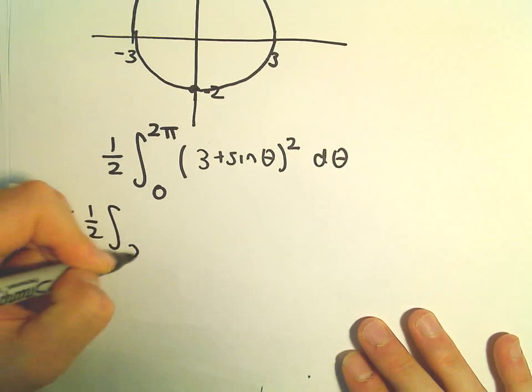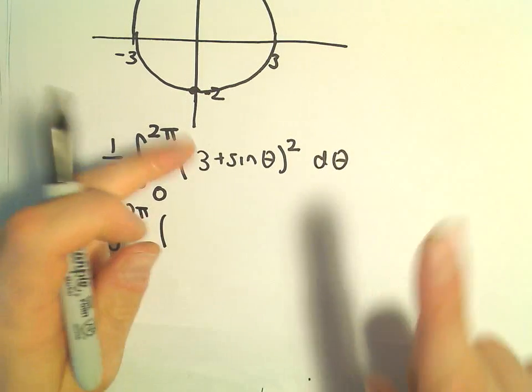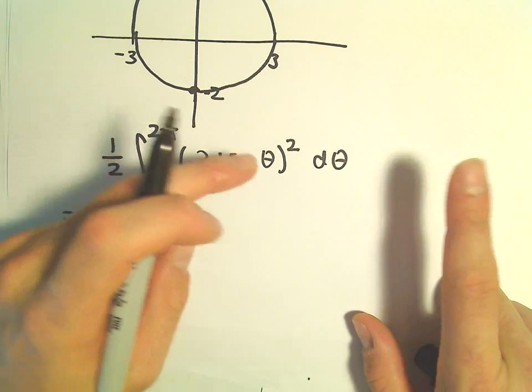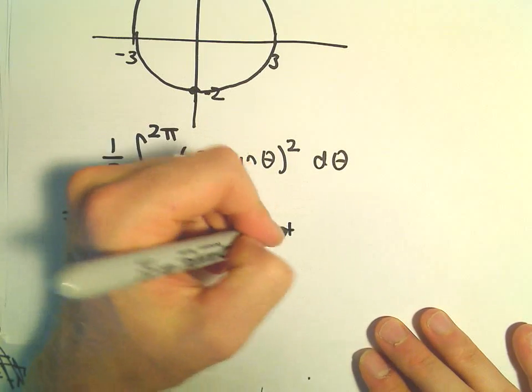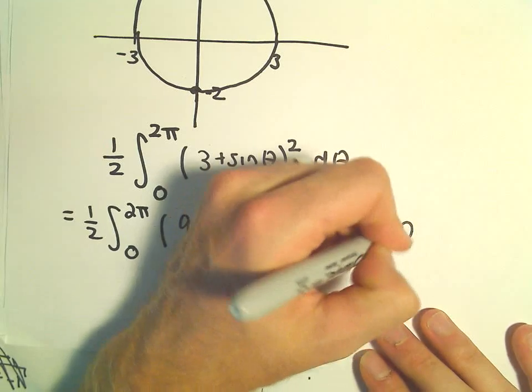So this is 1 half the integral from 0 to 2 pi. We could distribute this out. We would have a 3 times a 3, which would be a 9. We would have 3 sine theta plus another 3 sine theta, that would give us 6 sine theta. And then we would have sine squared theta d theta.